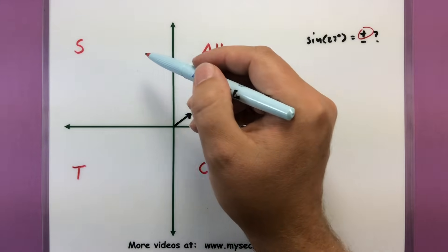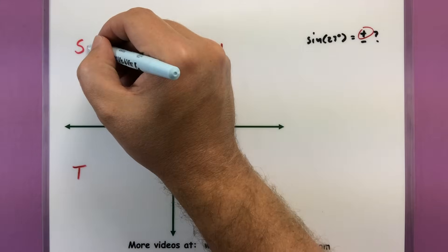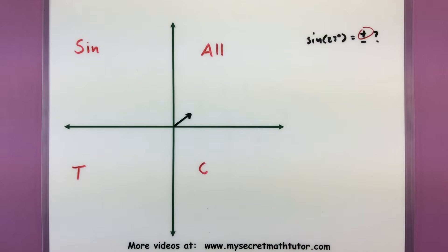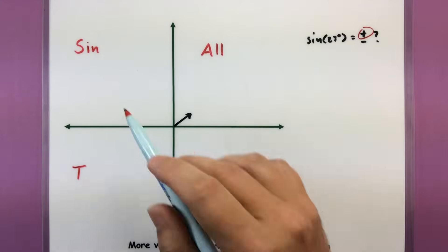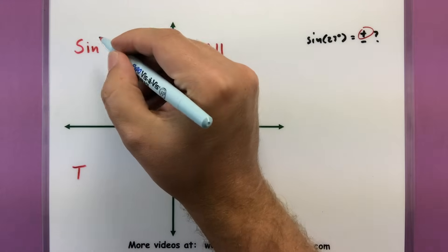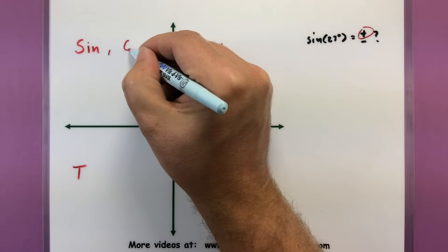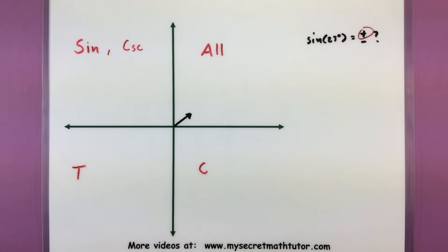These letters tell you which trigonometric functions are going to be positive or negative. For example, if my angle ends up in the first quadrant, then all the trigonometric functions are going to be positive. So sine of 23 degrees, that's in the first quadrant, so that's going to be a positive value. In quadrant two, sine and its reciprocal cosecant are going to be positive. What about tangent and cosine? Those will be negative.